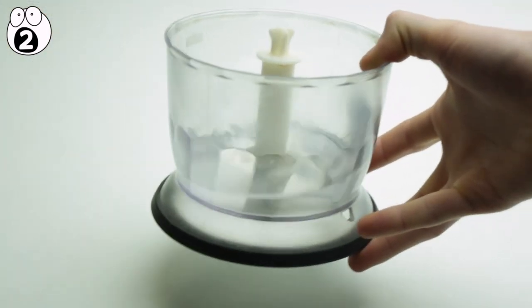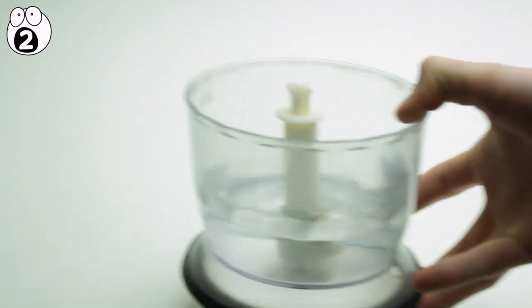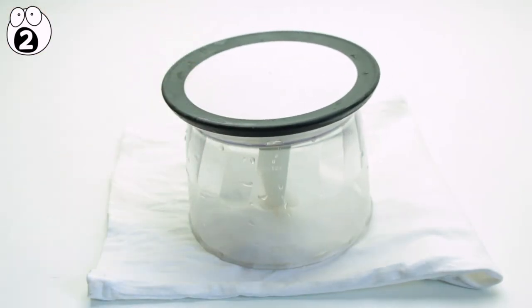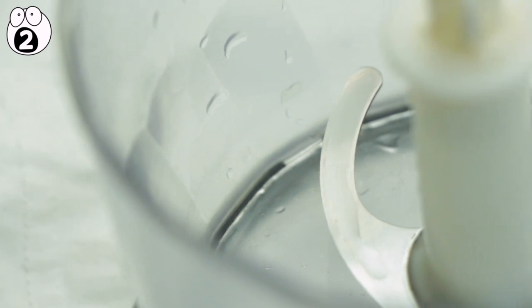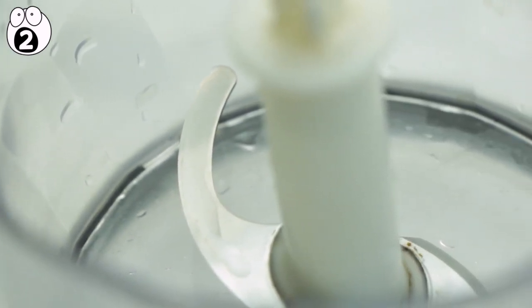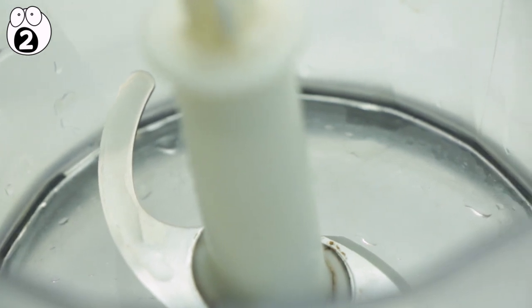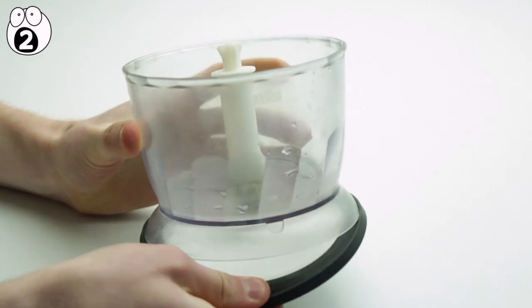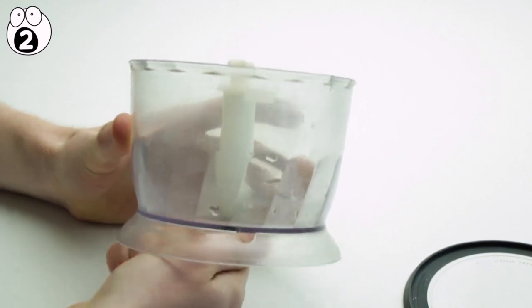Rinse it one last time until all the leftover soap is gone, and then place it on a kitchen towel upside down to dry. Not only will you save your fingers from some nasty cuts, you will also have cleaned the area below the blender blades, an area that was previously left unreachable without taking apart the blending cup and cleaning each part individually.